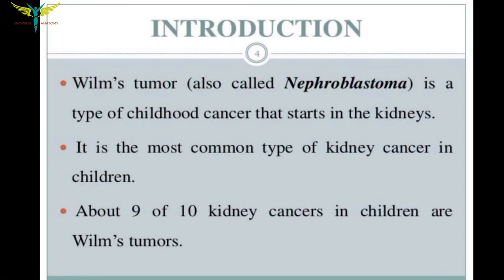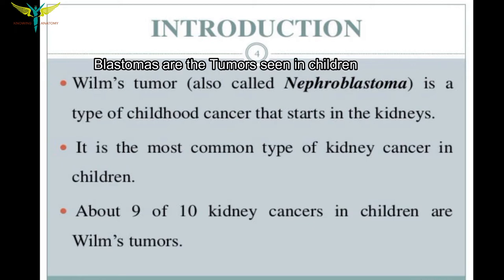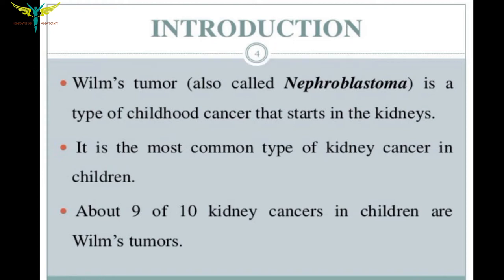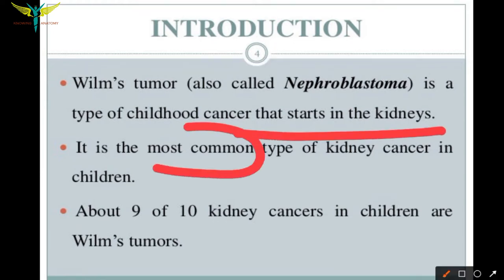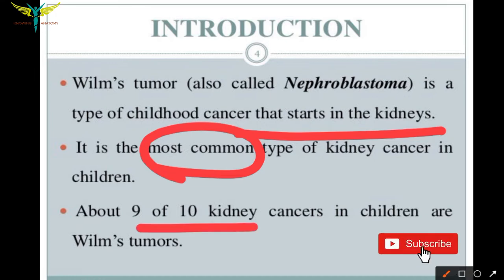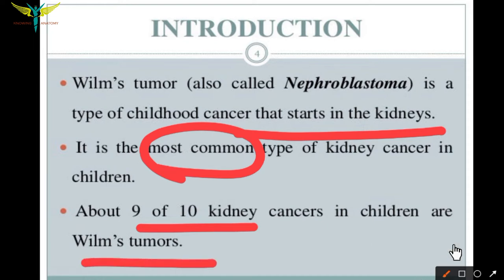Wilms' tumor is also called nephroblastoma — 'nephro' meaning kidney and 'blastoma' meaning tumor. It is a type of childhood cancer seen in the kidneys and is the most common type of kidney cancer in children. About 9 to 10 kidney cancers in children are of the Wilms' tumor type.